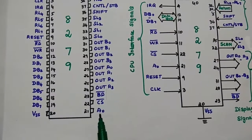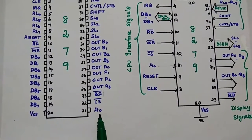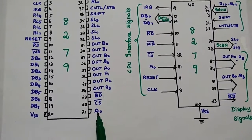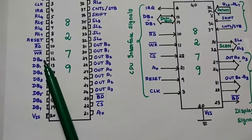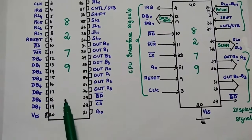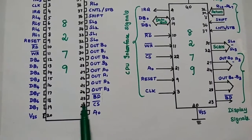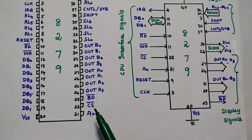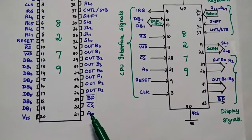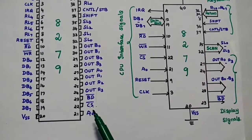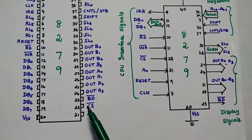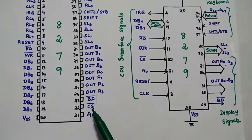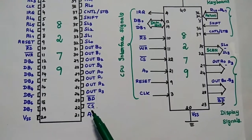On the right-hand side, the 21st pin is A0, that is the address line. The combination of the A0 address line with read bar and write bar defines the operation of the 8279. Next is CS bar, meaning chip select bar. It is an active low signal used to enable communication between the processor and the 8279. It is a very important control signal and should always be 0 to select the chip.